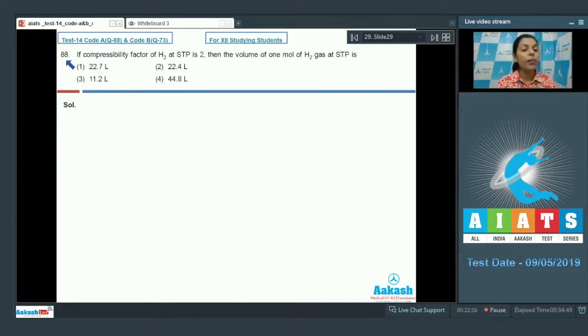Question number 88: If compressibility factor of hydrogen at STP is 2, then the volume of one mole of hydrogen gas at STP is... If I talk about STP, standard temperature and pressure, we should always know that Z is the compressibility factor and it is equal to V real upon V ideal.